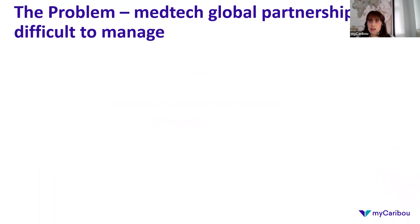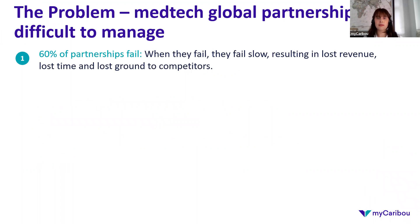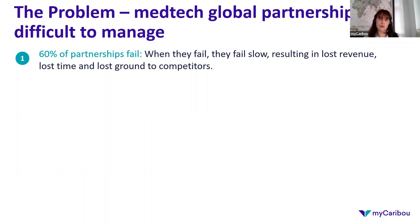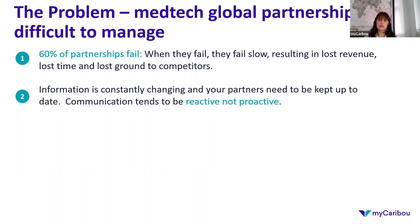Let's start by talking about the problem. Managing multiple partners around the globe successfully is very difficult. Six out of ten partnerships fail, but they fail slowly, resulting in lost revenue, lost time, and lost ground to competitors. Losing ground to your competitors is key — if you're entering a new market and the initial launch doesn't work out, that can leave a very damaging effect on your reputation in that market going forward. Critical information is constantly changing, and without a central location to share information, communication tends to be reactive to problems, meaning you're not catching issues before they arise.